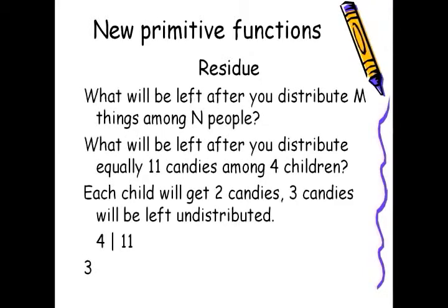Residue is another function that returns what will be left after you distribute M things among N people. For example, what will be left after you distribute equally 11 candies among four children. Well, each child will get two candies and three candies will be left undistributed. So the way to do that, you say 4 modulo 11. And modulo is on the M key. So you do Ctrl M key and you get the modulo function.